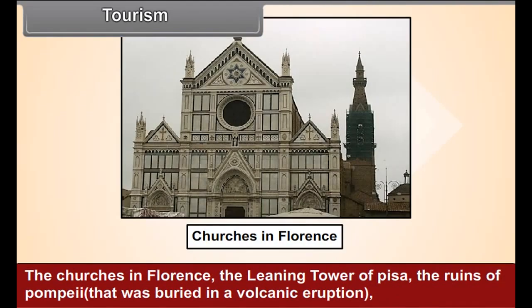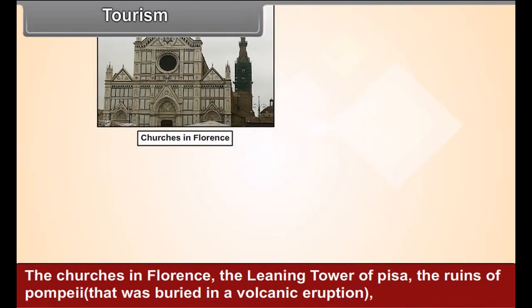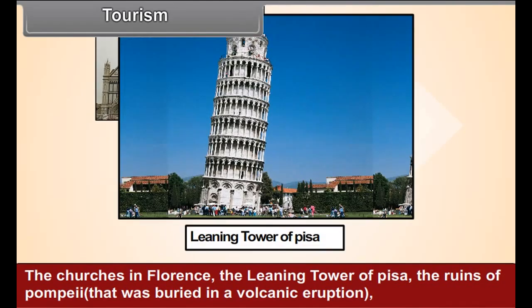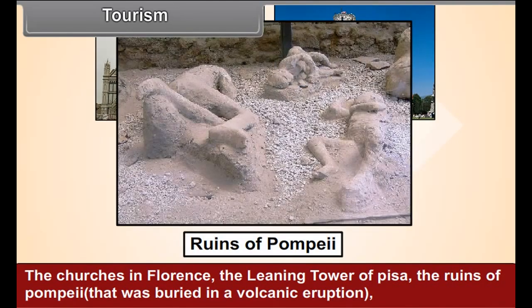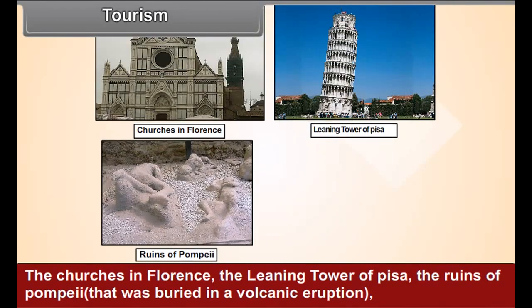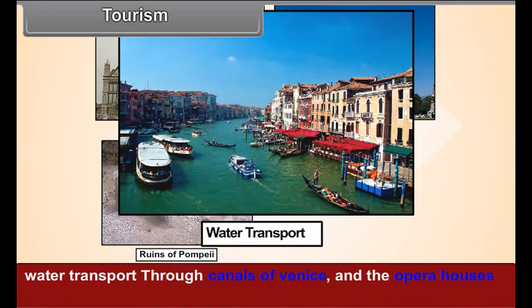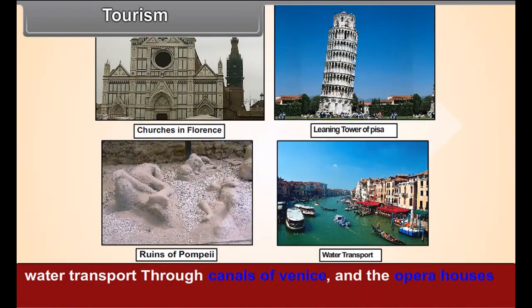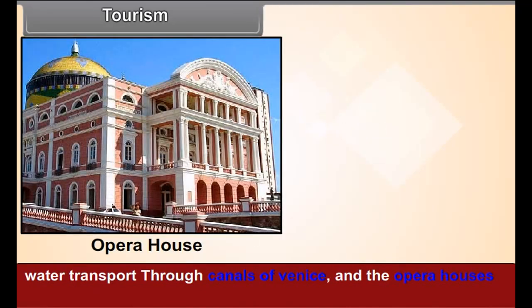The churches in Florence, the Leaning Tower of Pisa, the ruins of Pompeii that was buried in a volcanic eruption, water transport through canals of Venice, and the opera houses and theatres in different cities also attract a large number of tourists.